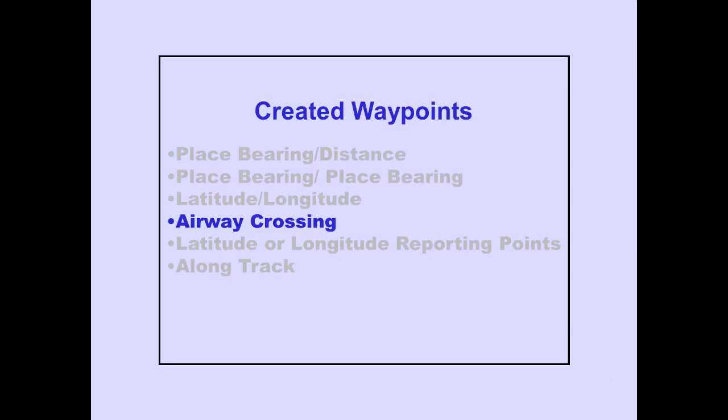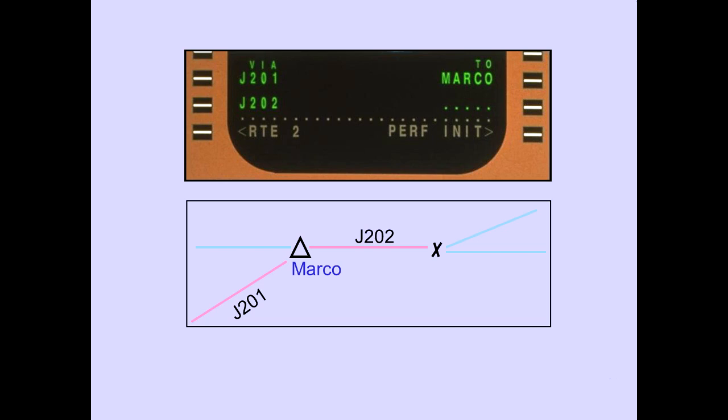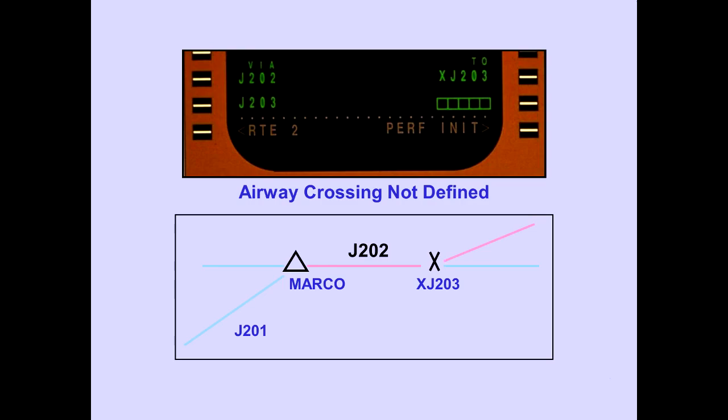Let's look at airway crossing points. When the intersection of two airways is defined in the navigation database, that intersection will be the airway crossing point. When the intersection of two airways is not defined in the navigation database, the FMC creates an airway crossing point. The waypoint is stored as a latitude-longitude.